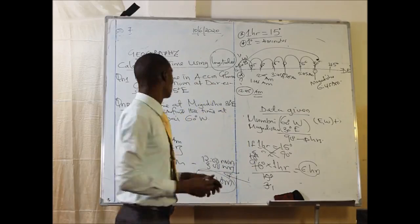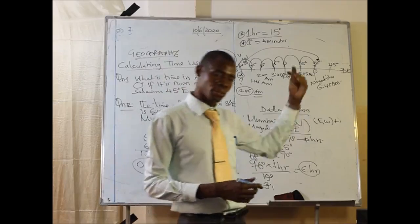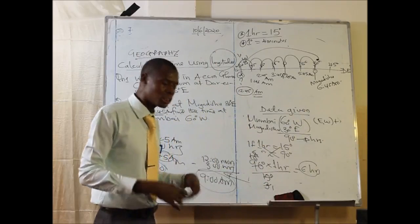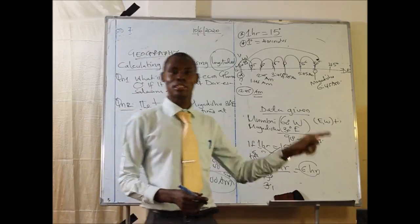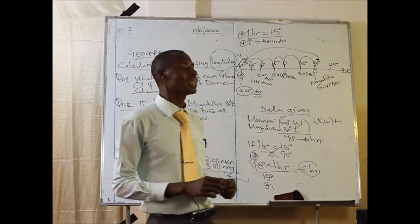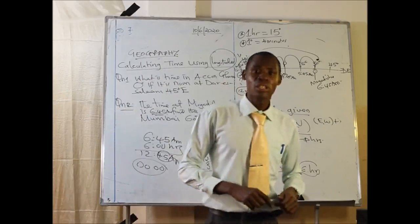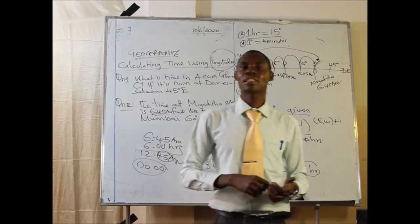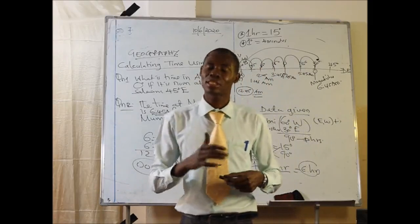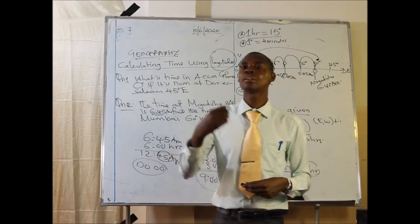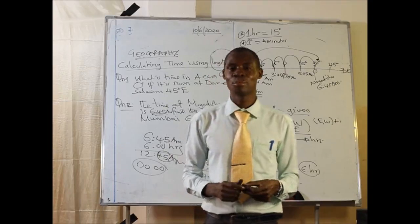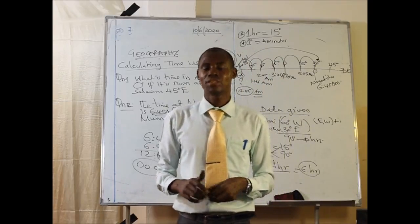So dear viewers, today we have seen how when one is moving from east towards west, we lose time. In the coming lesson, we shall see what happens when somebody is moving from west towards east — we normally gain time. Please continue revising at home, check the papers sent to you, as there are various questions on calculation of time using the lines of longitude. This is very important for the Standard 7 examination. Have a good day, see you next time.